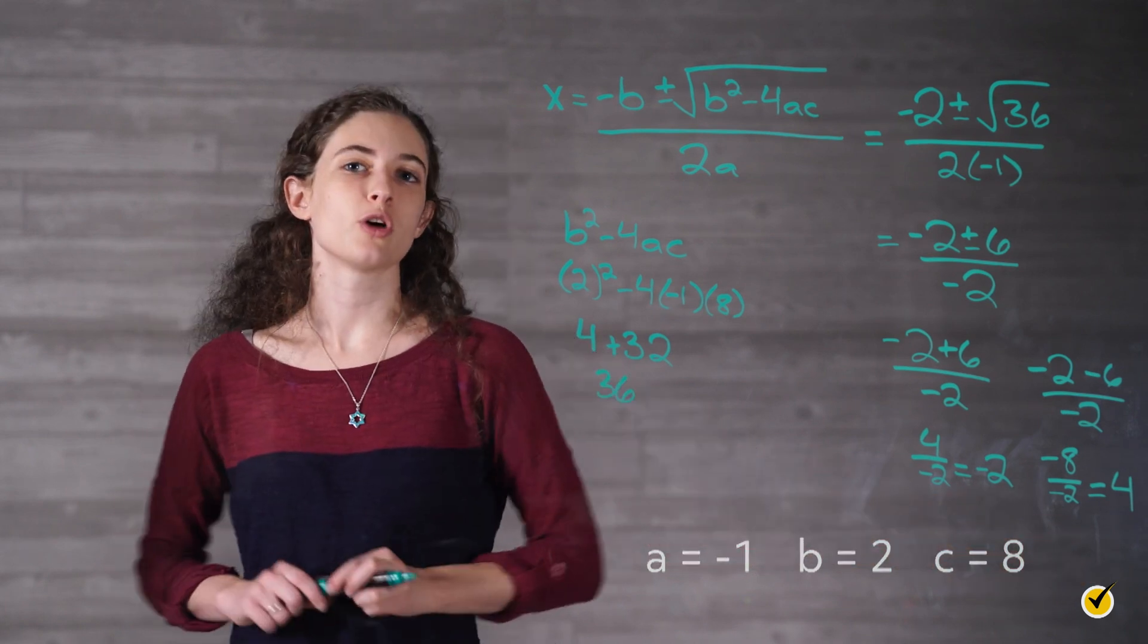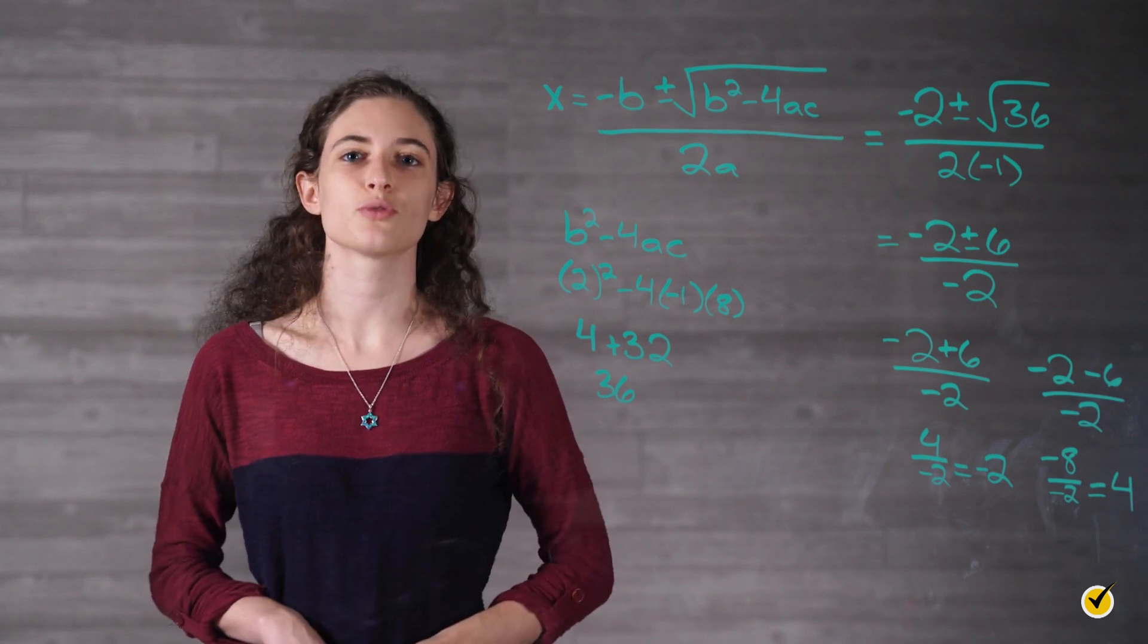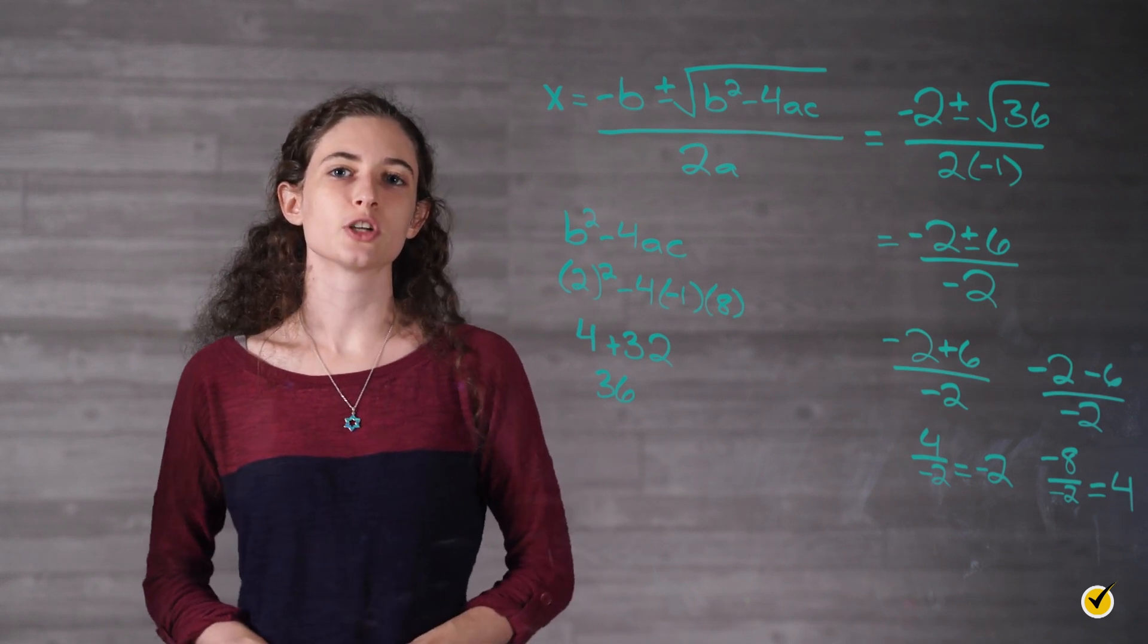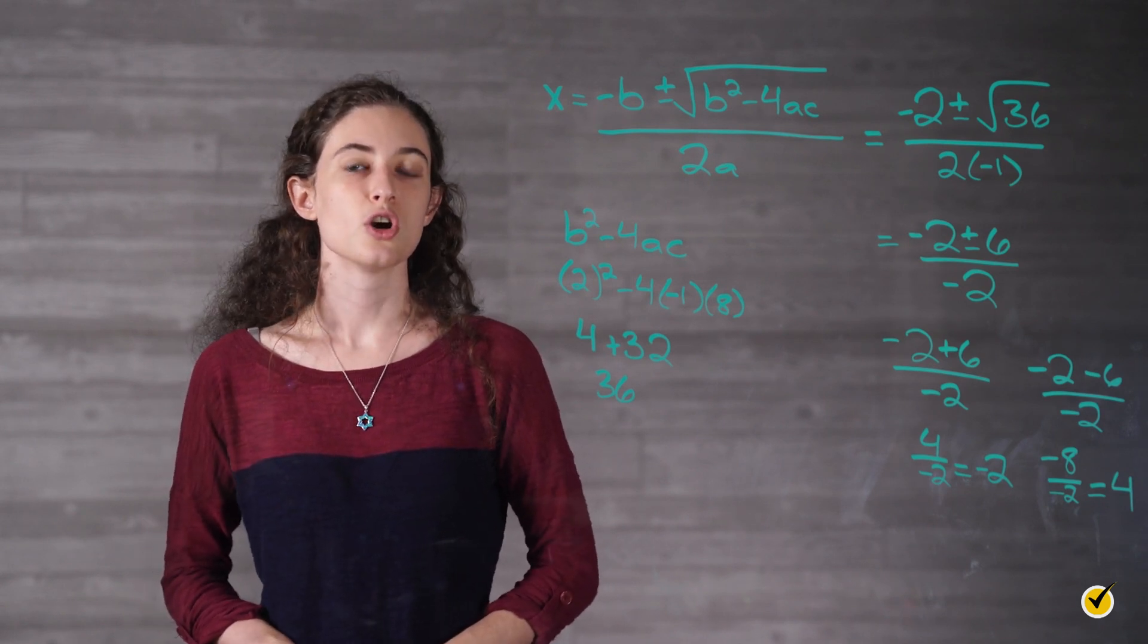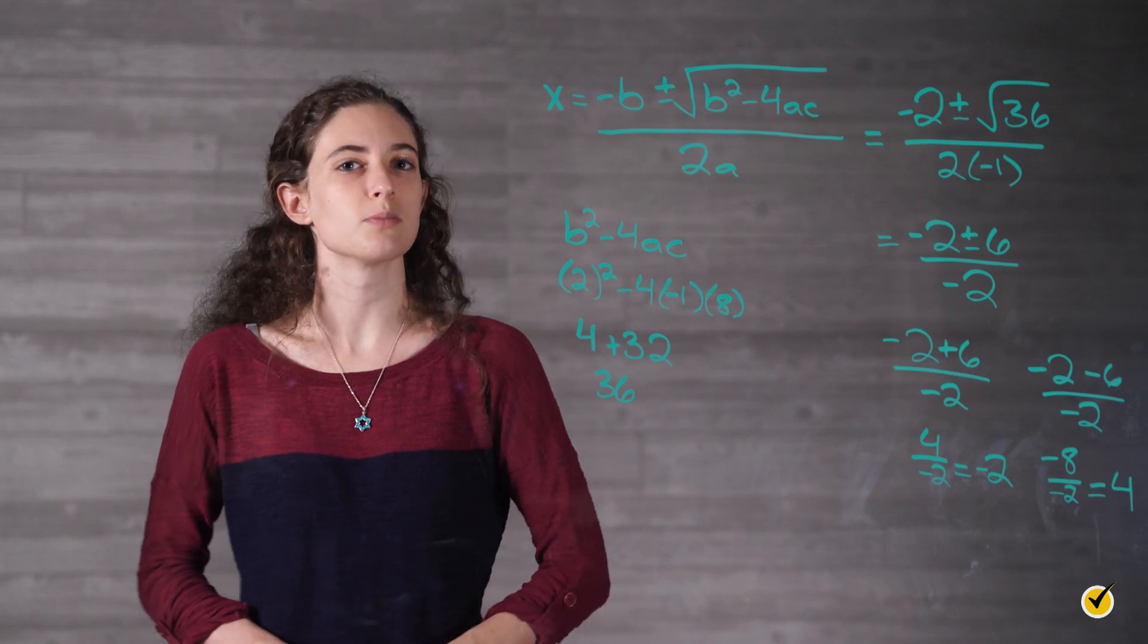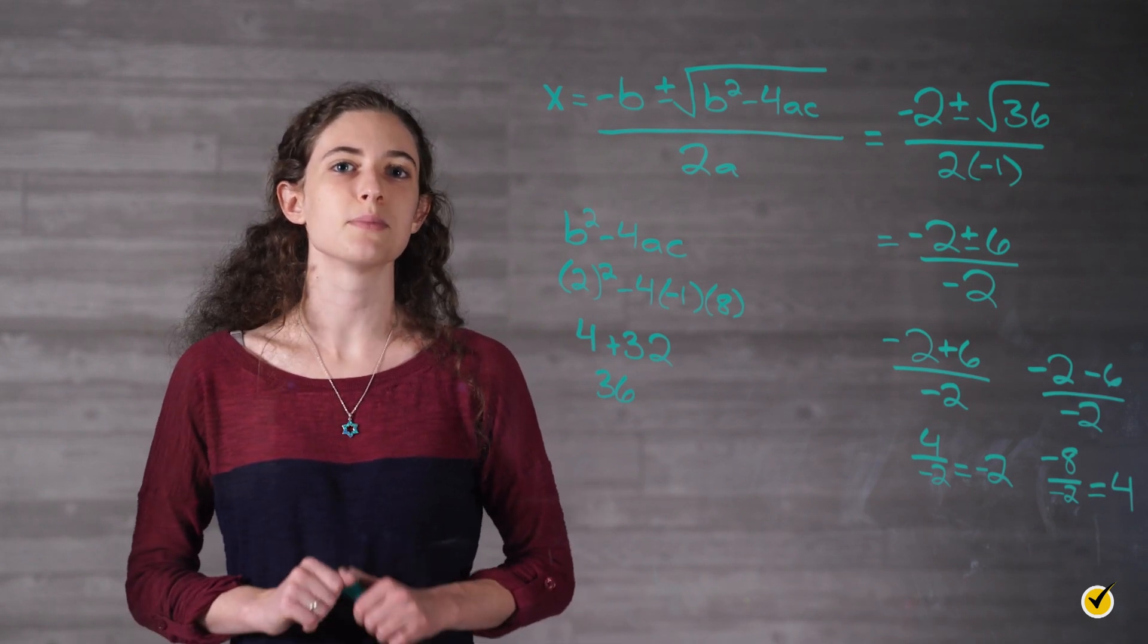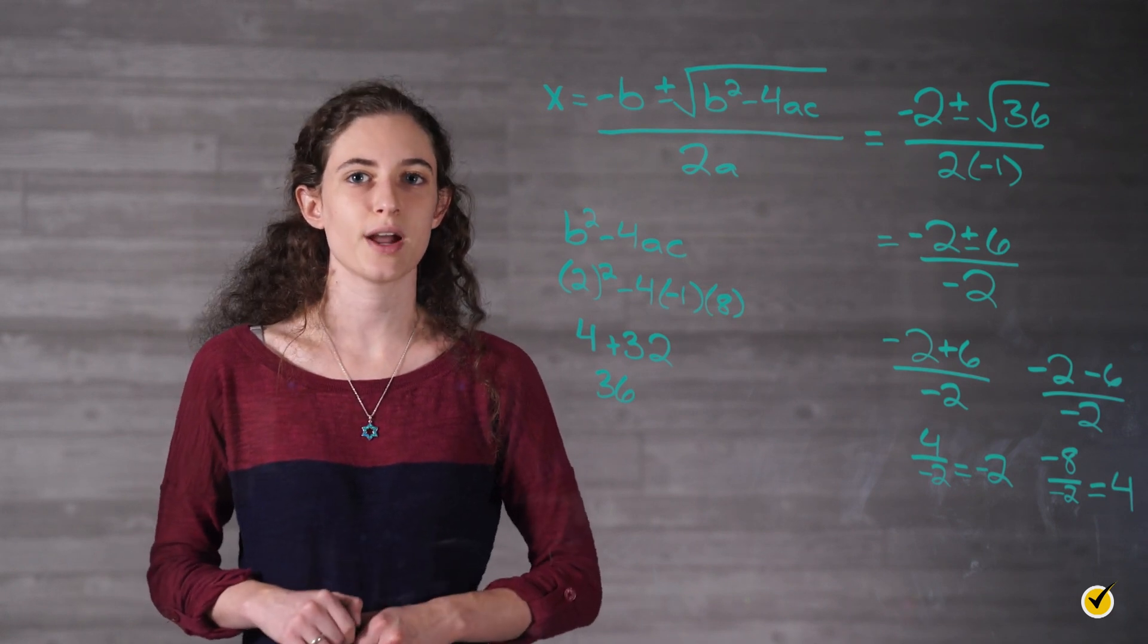We've seen all four quadratic equations solving methods in action. Now let's put some context around our practice equation. Suppose our function f of x equals negative x squared plus 2x plus 8 represents the height of a rock from the ground in meters you throw off of a small cliff as a function of time in seconds. We want to know how long it takes for the rock to hit the ground.